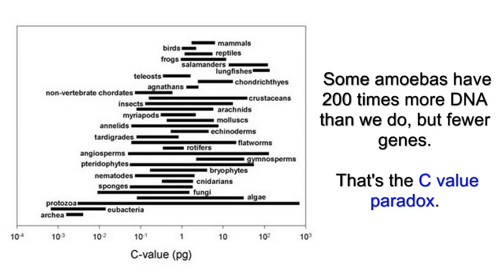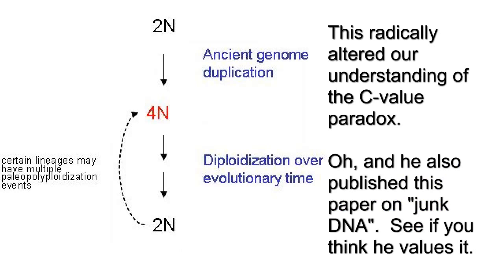It turns out the C-value does not correlate with how many genes are in that genome. Susumu, in the paper I'm about to read excerpts from, framed this paradox as the question of the non-coding DNA, which he playfully calls junk DNA. Listen carefully and see if you think he dismisses that as unimportant or uninteresting, as the Discovery Institute would have you think.